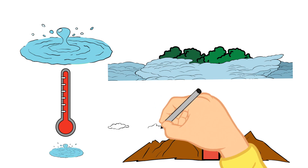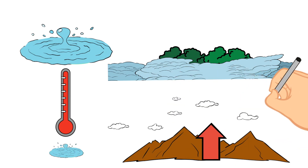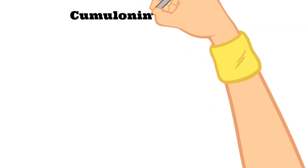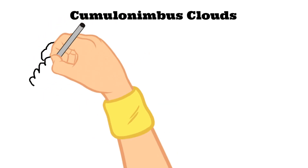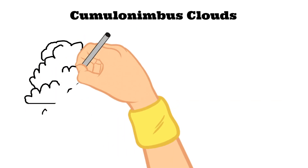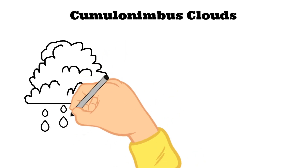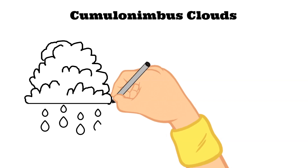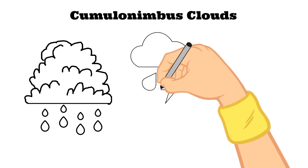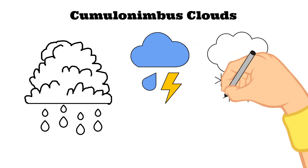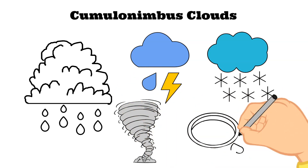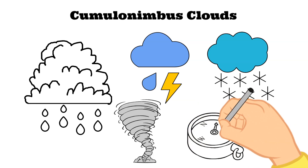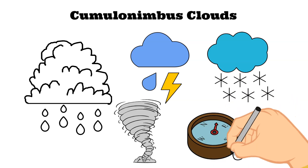Once clouds have formed, they will remain there until the air is either warmed or rain falls. The first cloud type I want to talk about today are cumulonimbus clouds. These are thunderstorm clouds. They tower high and they have tops that are often shaped like anvils. These types of clouds are associated with things like heavy rain, heavy snow, hail, lightning, and even tornadoes. Something interesting about cumulonimbus clouds is that the anvil at the top usually points in the direction that the storm is moving.